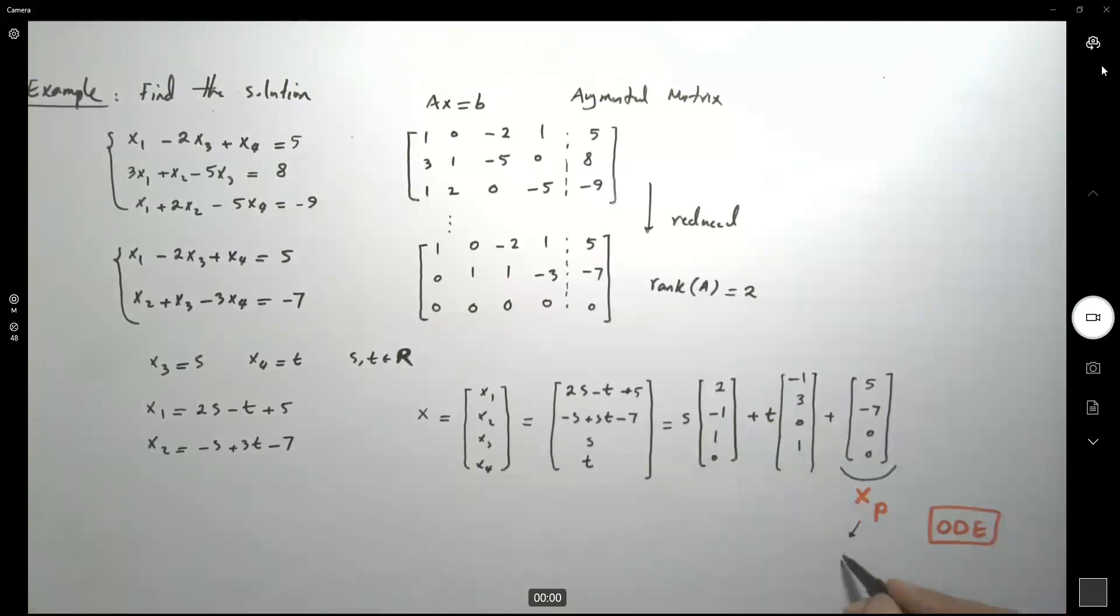And these two are maybe general solution, particular solution, and we can denote this with, for example, u1 and u2. So basically your x is equal to s u1 plus t u2 plus x sub p.